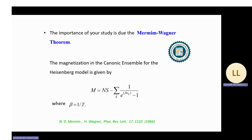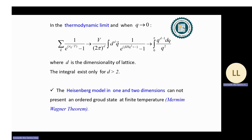The result is well known as the Mermin-Wagner theorem, given in rigorous steps in the reference. In the thermodynamic limit, when the wave vector tends to zero, the integral on the right side is divergent for D equal to two dimensions, and the integral exists only for dimension greater than two. Consequently, the Heisenberg model in one and two dimensions cannot present an ordered ground state at finite temperature. This is the result of Mermin-Wagner theory.